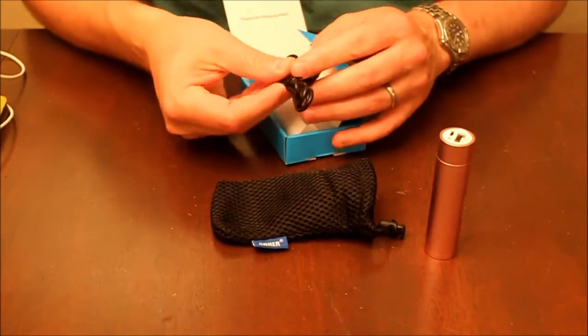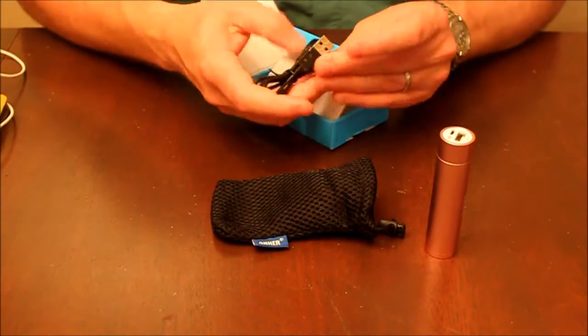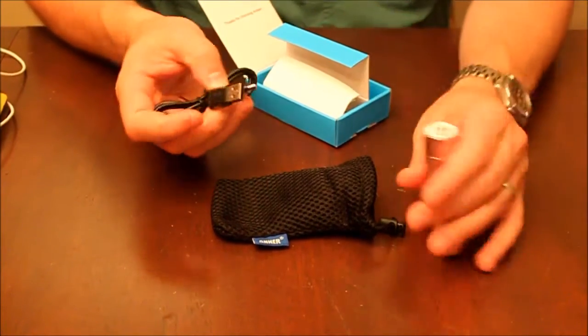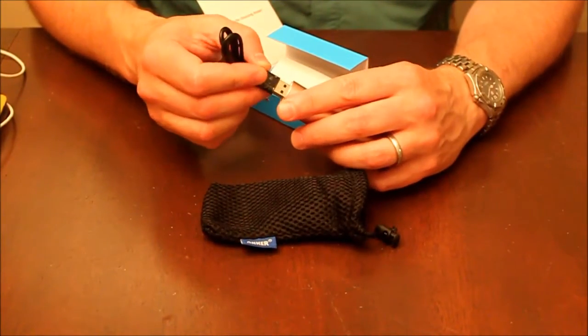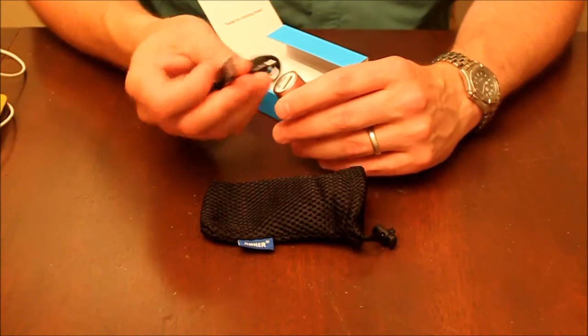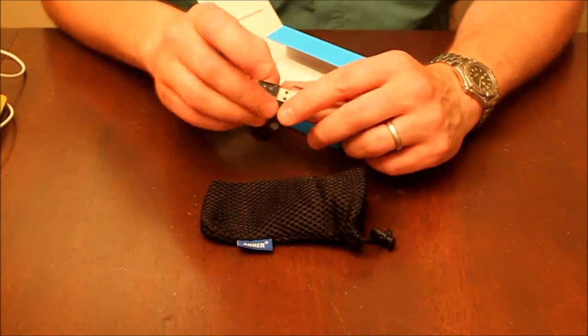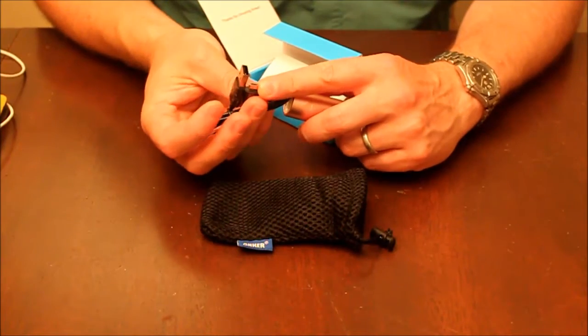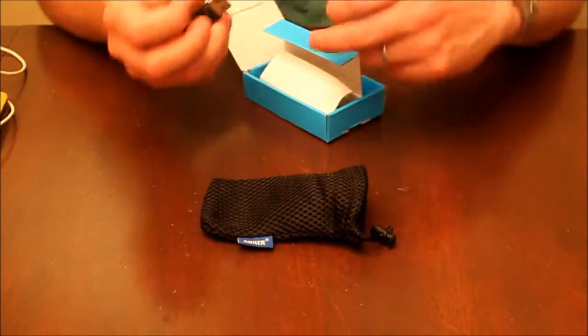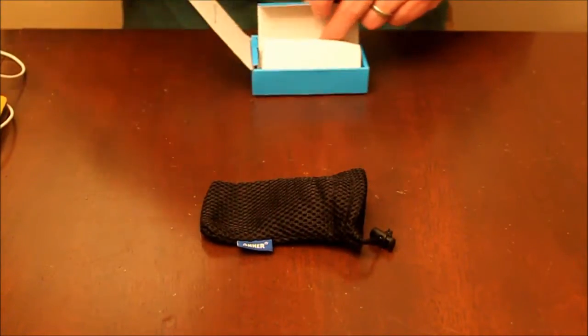You also get a USB cable. You can use this to charge your phone from another USB port, but you can also flip it inside out to charge an Android device or Kindle, anything that takes a micro USB. So it serves two purposes.